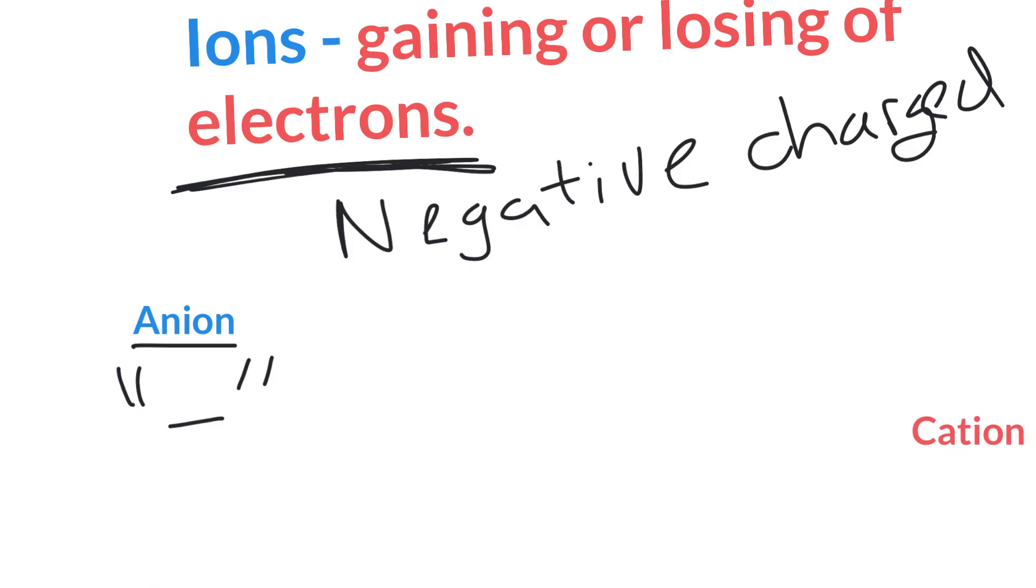Now, the other kind, if we lose, then it's going to become what we call a cation. Meow. And it's even in the name there. A cation, and if you think about it, that T, think about a positive, because you get more positive, a positive charge, if you are a cat, meow, ion.